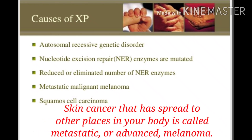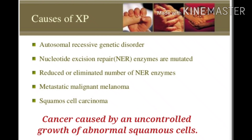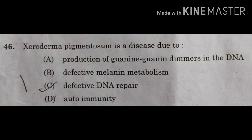Metastatic melanoma is skin cancer that has spread to other parts of your body — also called advanced melanoma. Squamous cell carcinoma is cancer caused by uncontrolled growth of abnormal squamous cells. So the correct answer is option C: defective DNA repair. Don't forget to study the DNA repair mechanism, as examiners will likely give importance to this topic.